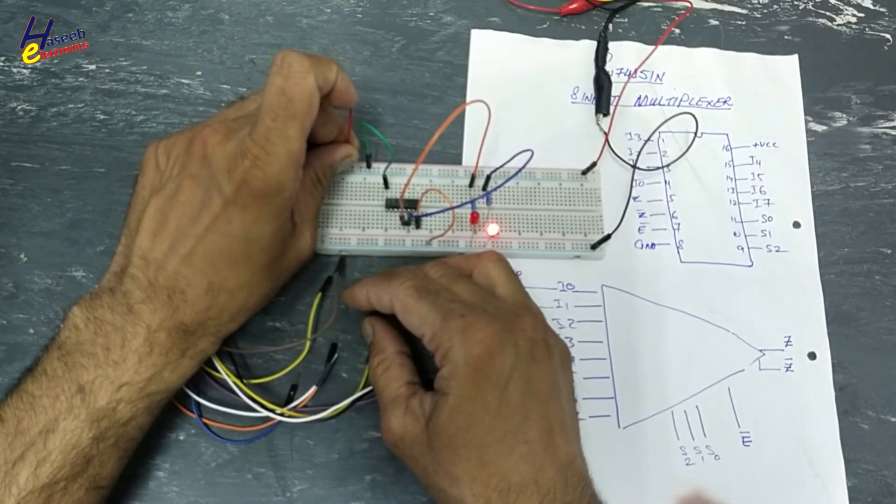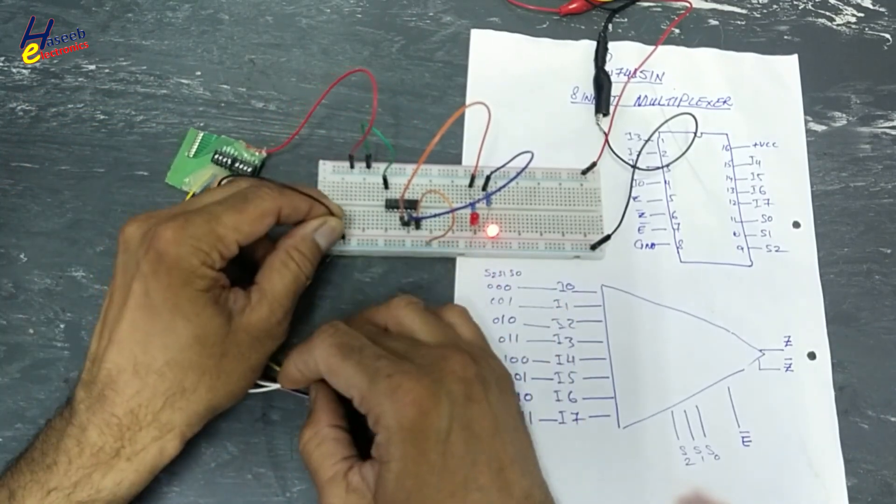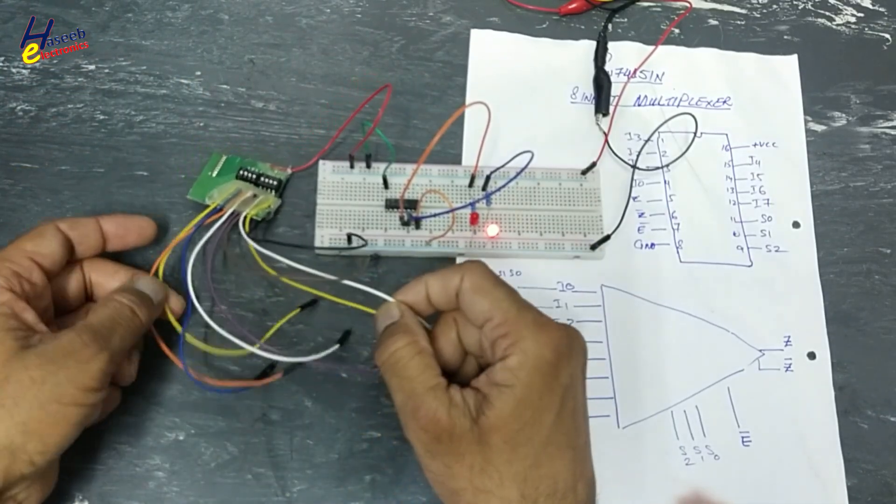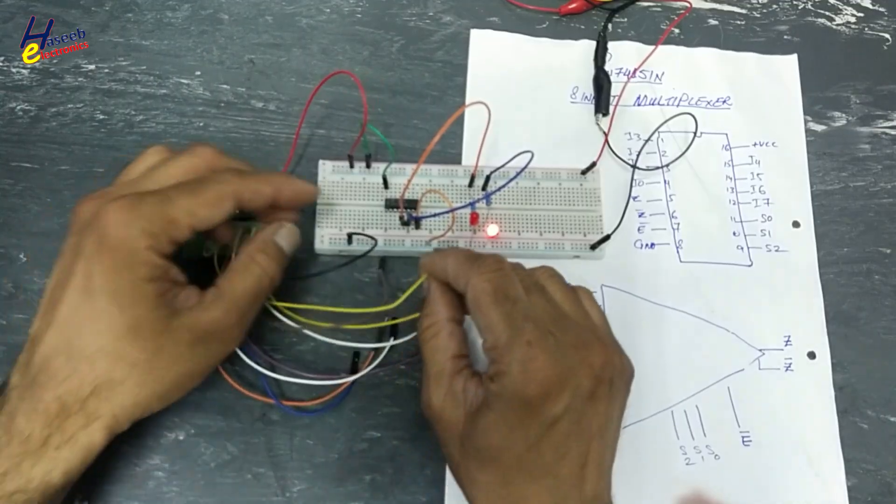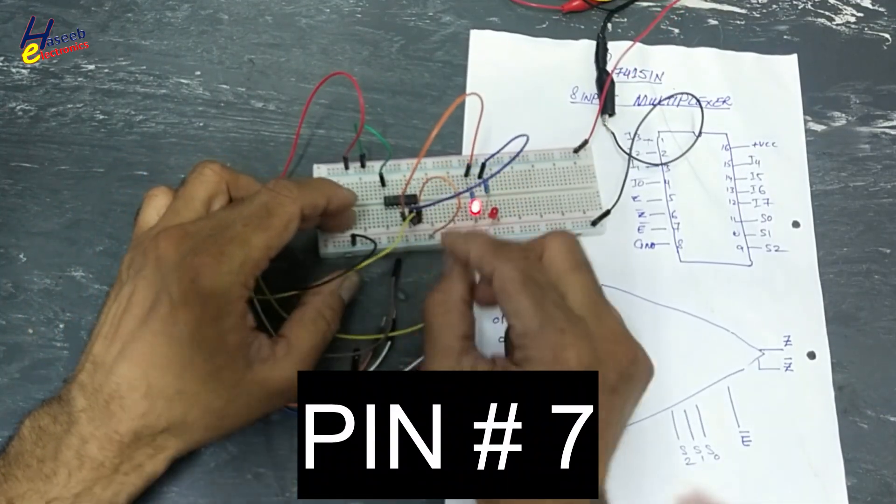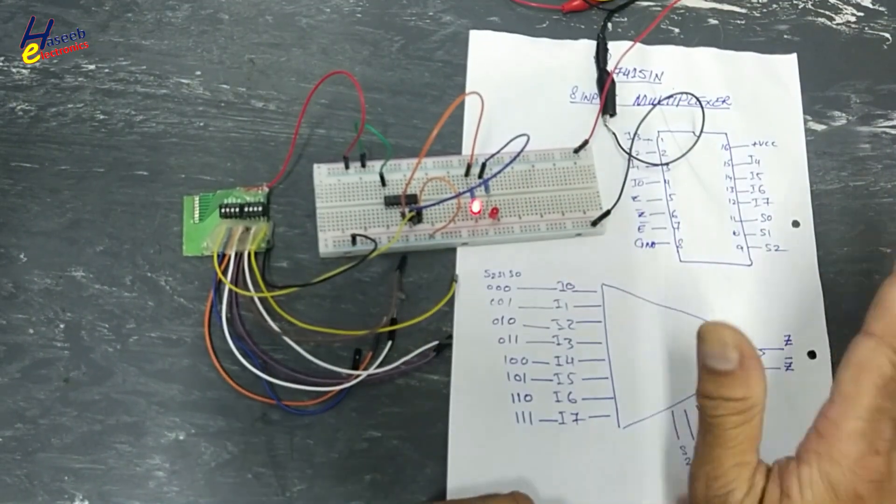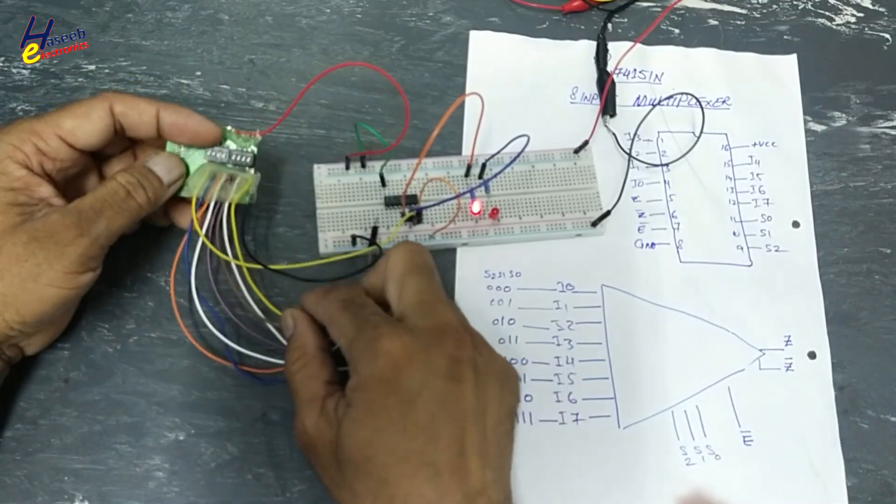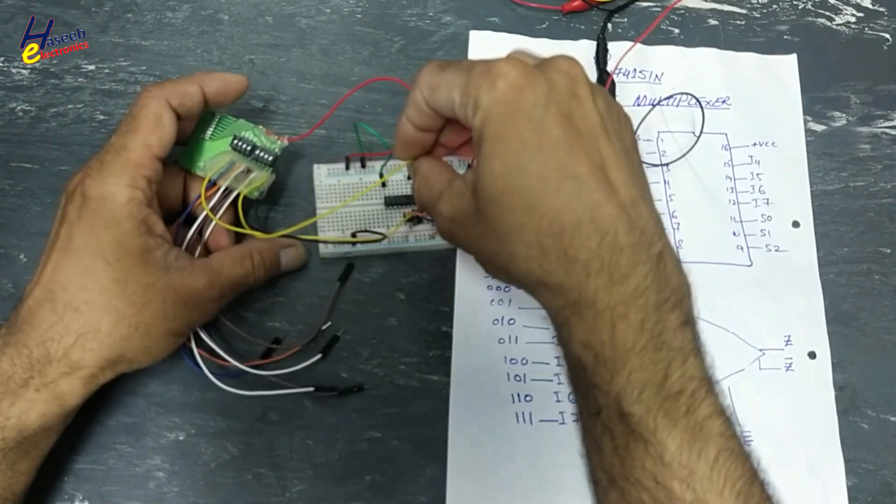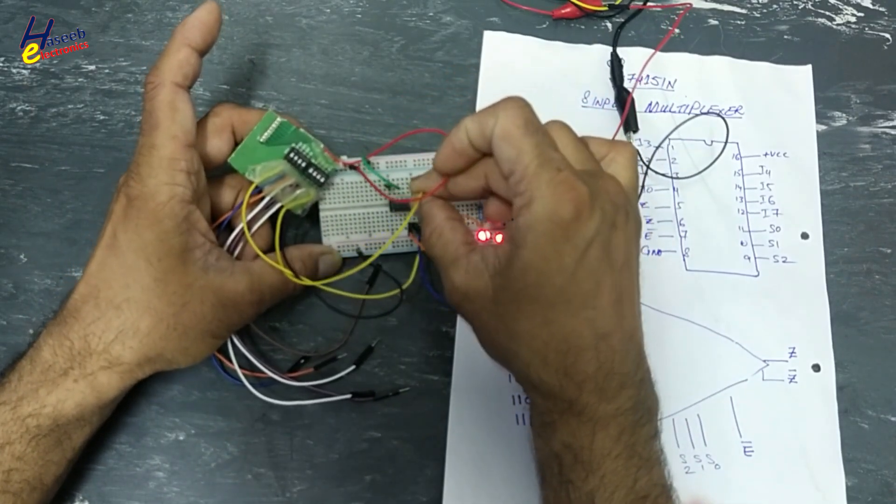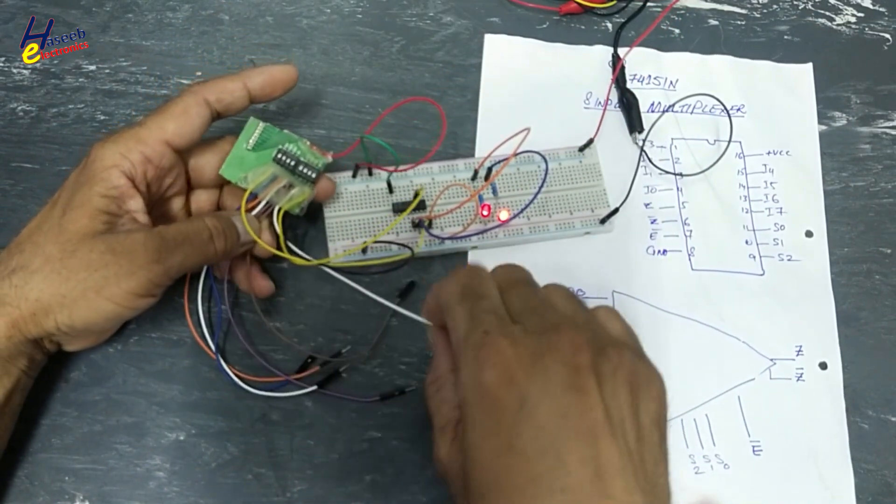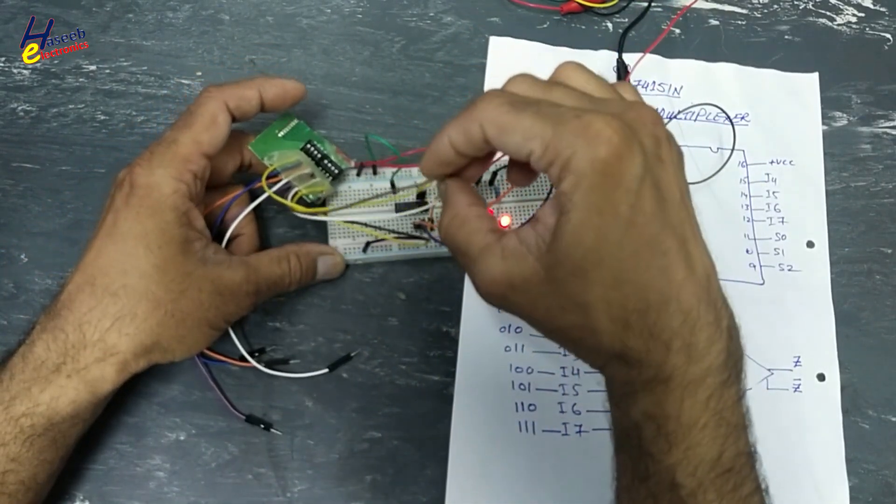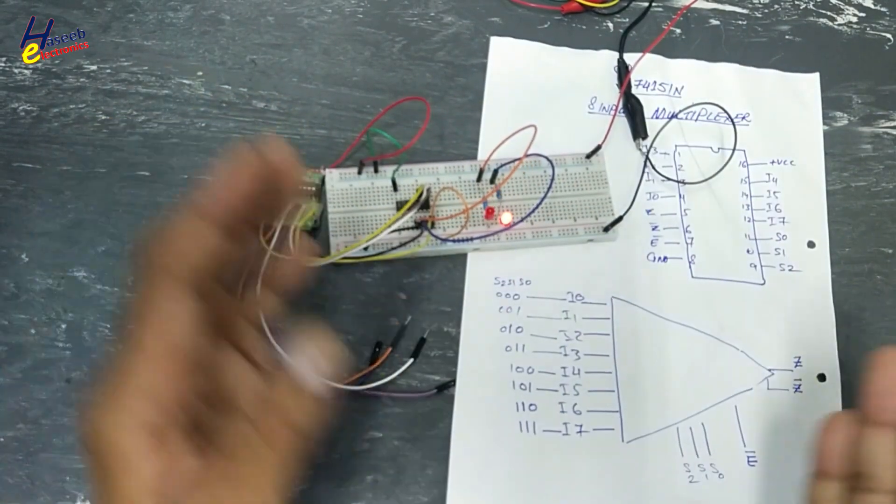I will use this pattern generator. It is very useful tool. You can make very simply using DIP switches and resistors. Enable signal. This will enable or disable the function of this chip. We need S0, S1, S2. That are address selections to select different locations. S0, S1, S2. Now we will see.